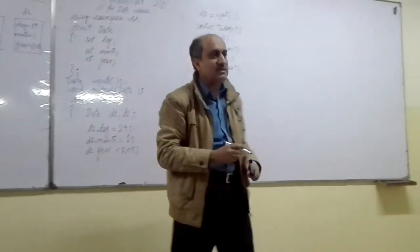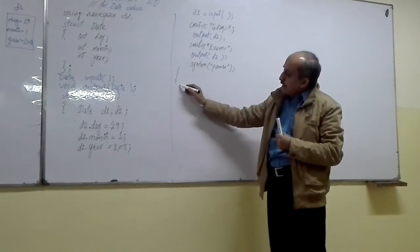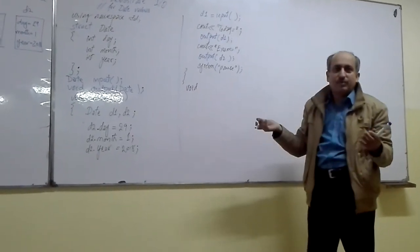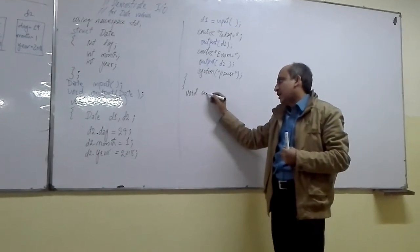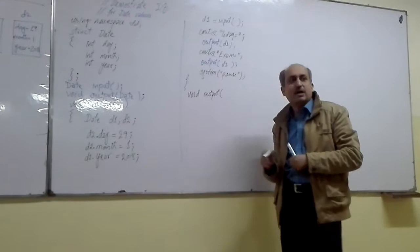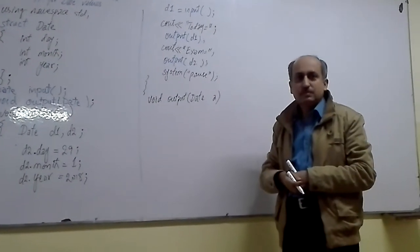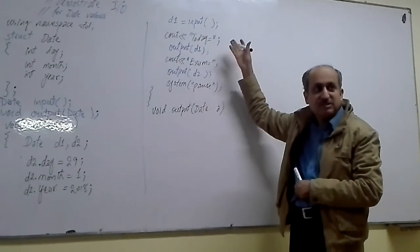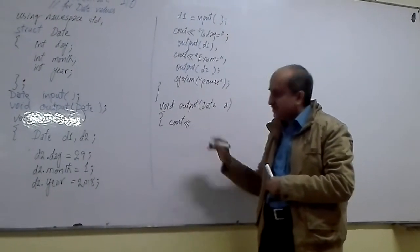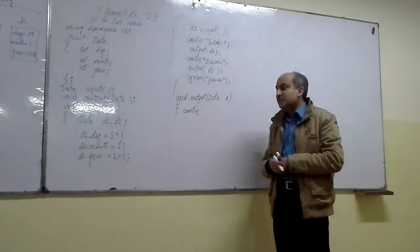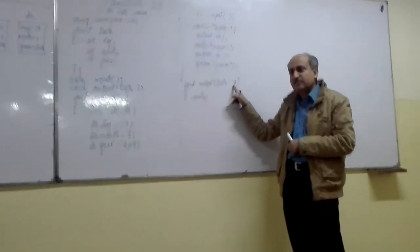Now we want to write the definitions of the input and output functions after the main program. You can write the input or output function first — their sequence does not matter. I am defining the output function first. The output function requires one date type value as argument, which is passed from the main program; it can be D1, D2, or any other date type variable. In the cout statement, I use this variable name with the dot operator to access the attributes of the date structure.